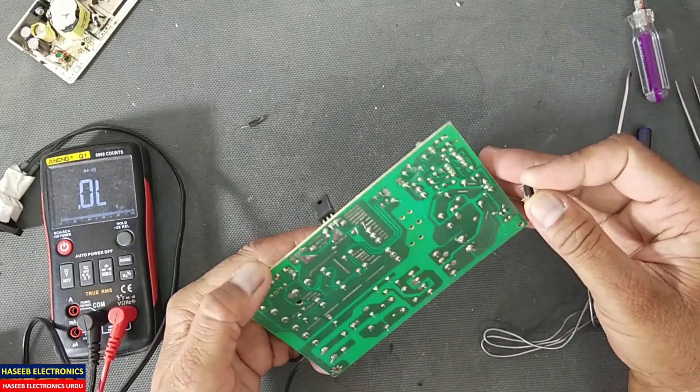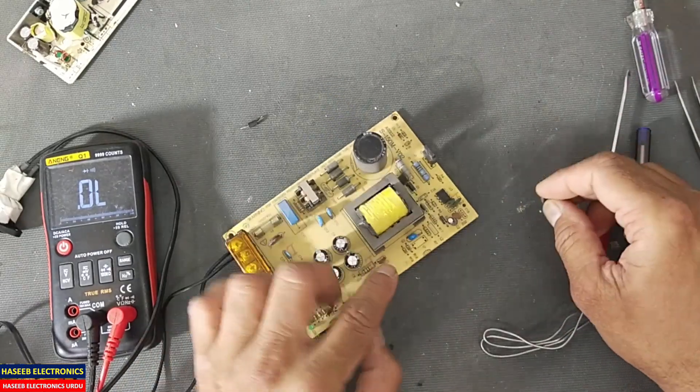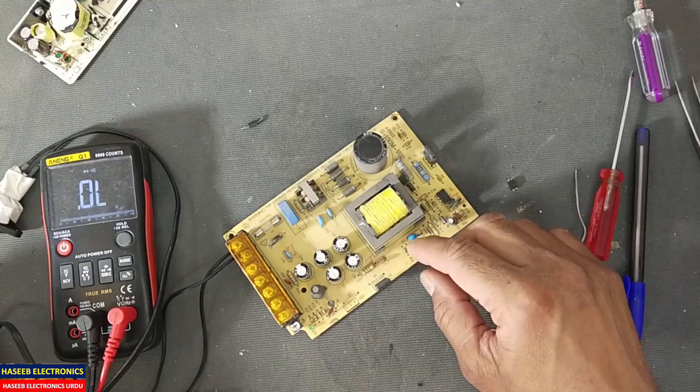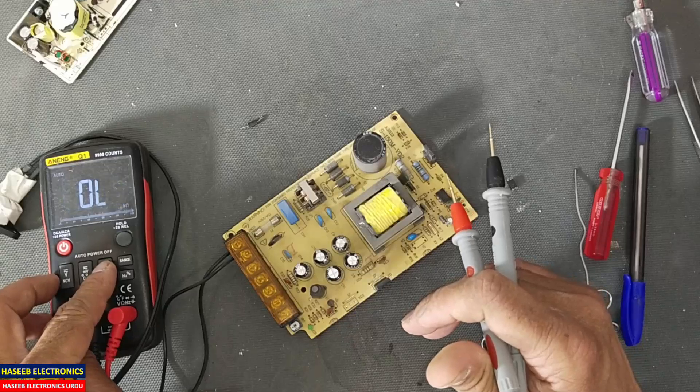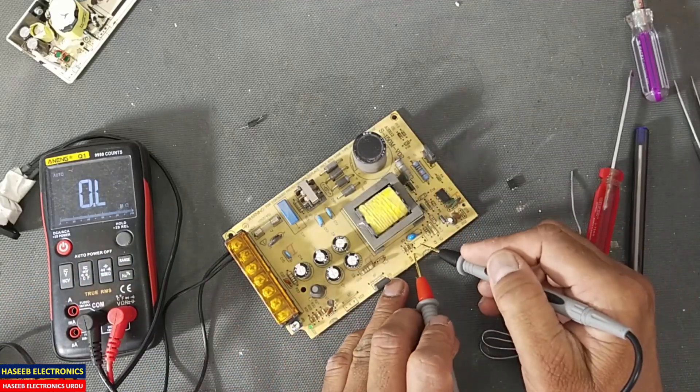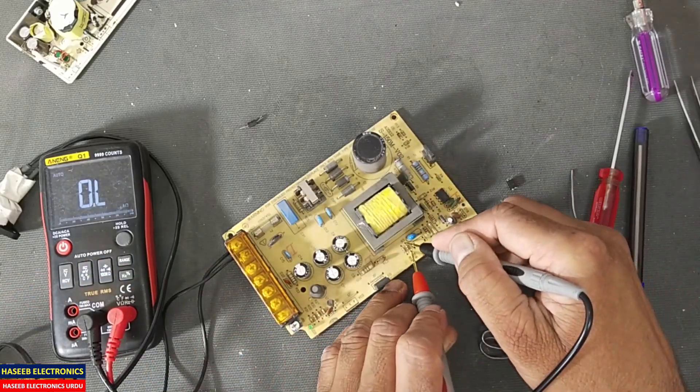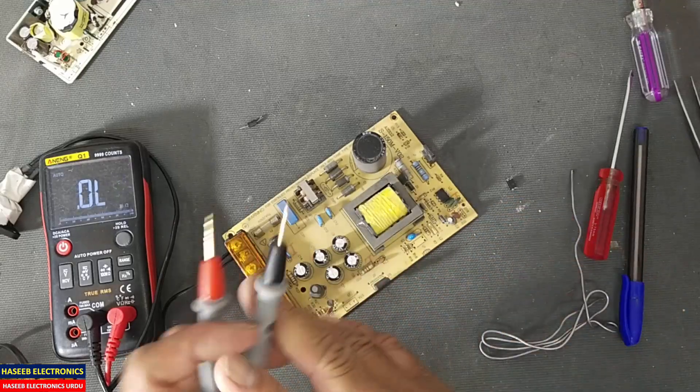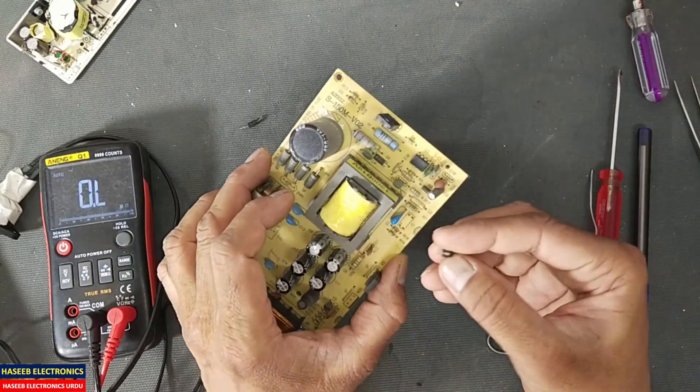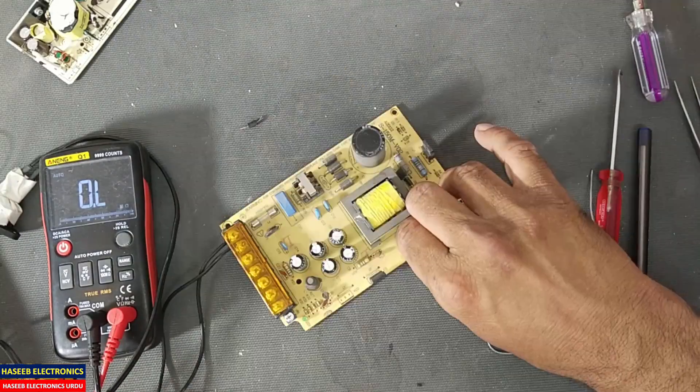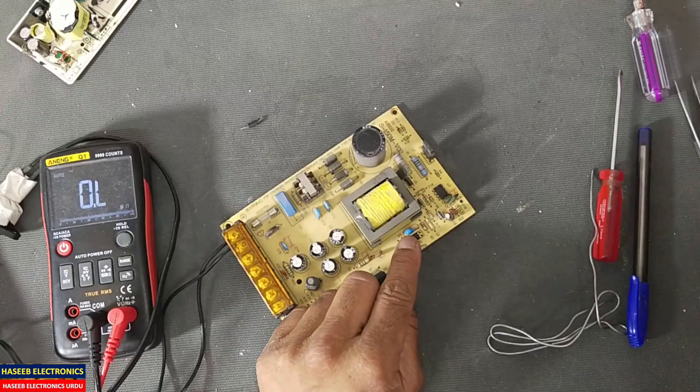Now we will connect it here and we will check this resistor that is in parallel to this. Yes, this is 1.9K - actually it is a 2K resistor, that is good. We will install this optocoupler here.